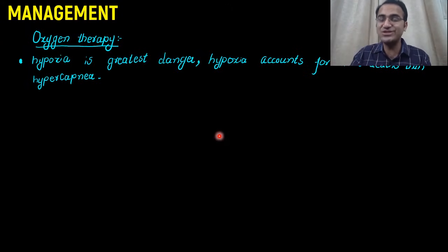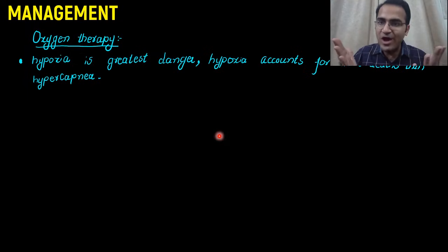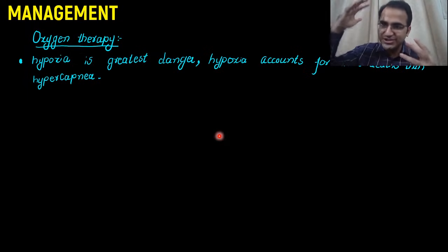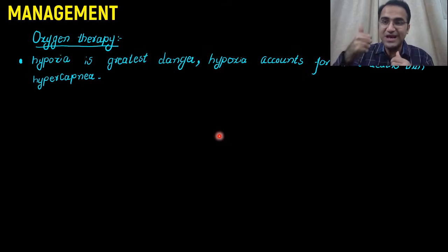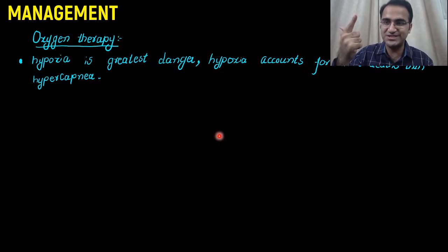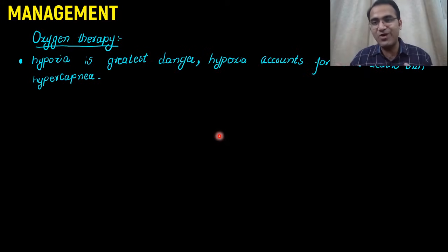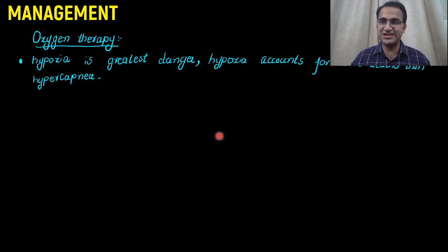If you give 100% oxygen to these patients, there will be no hypoxia. And if there is no hypoxia, the respiratory center will just shut down — because hypoxia is what stimulates the respiratory center. If there is no hypoxia, there is no stimulation of the respiratory center and the respiratory system will shut down, and that patient will develop a respiratory arrest.